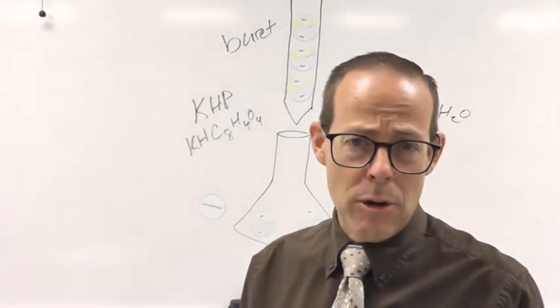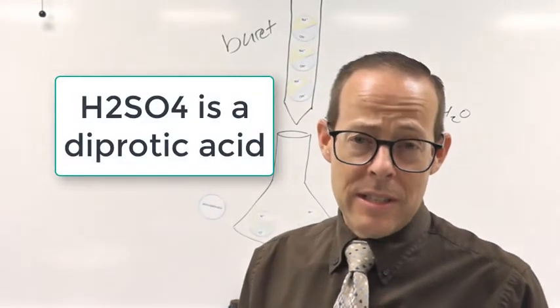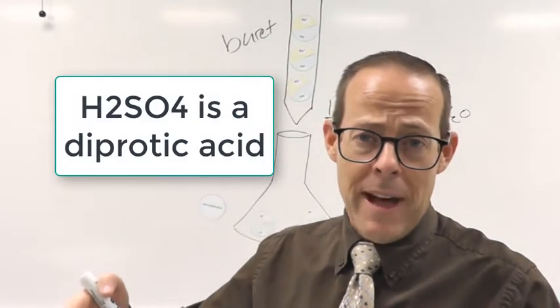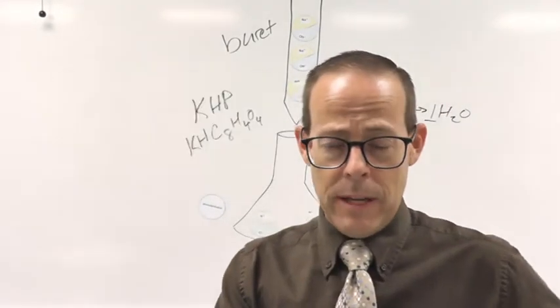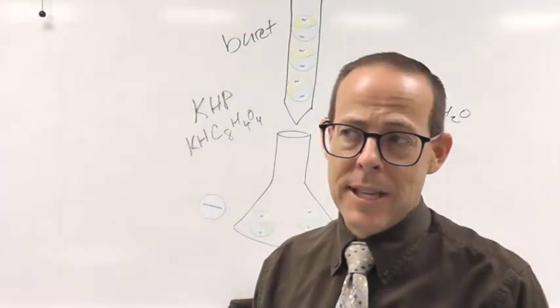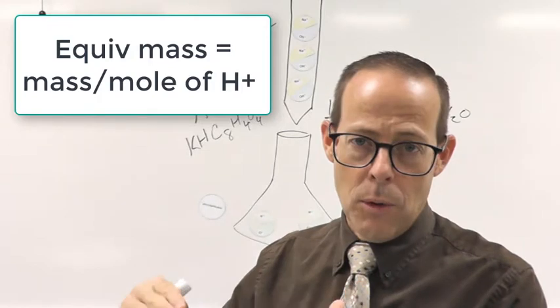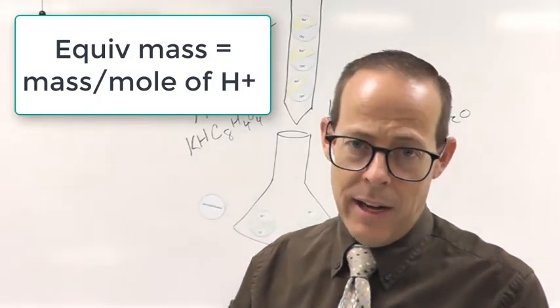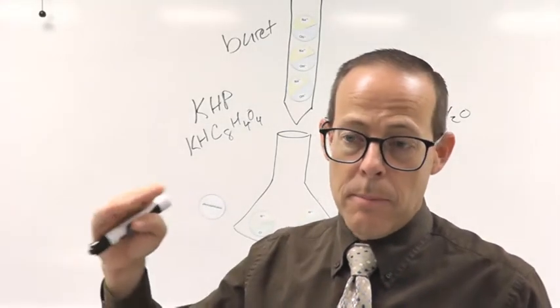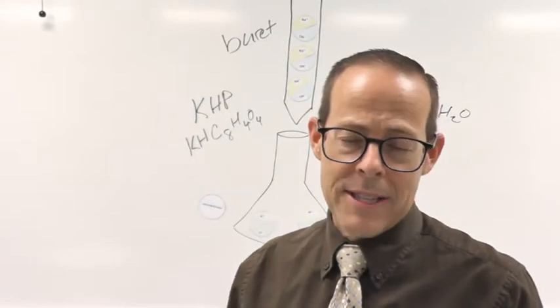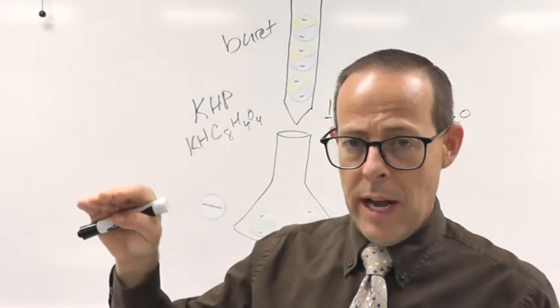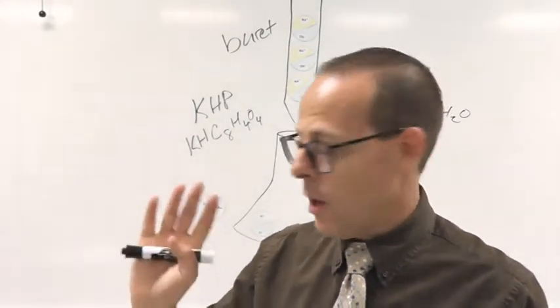So whether it's monoprotic, diprotic or triprotic. And if we know it's diprotic, then we would multiply our equivalent mass by two to get its molar mass. So equivalent mass is basically the mass of our compound per moles of H plus ion. So instead of grams per mole, which is molar mass, equivalent mass is grams per moles of H plus.